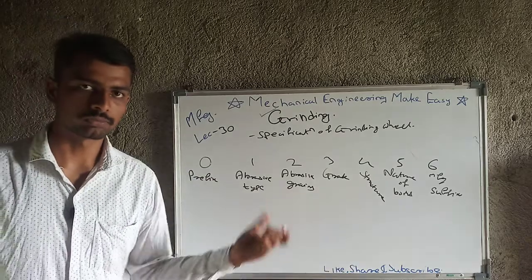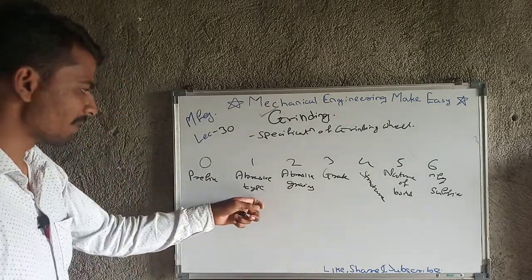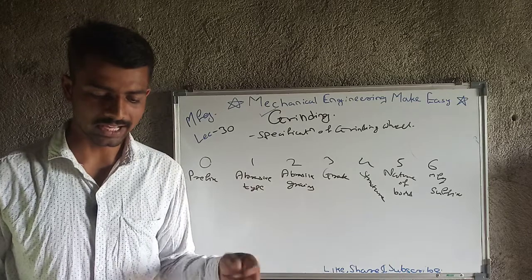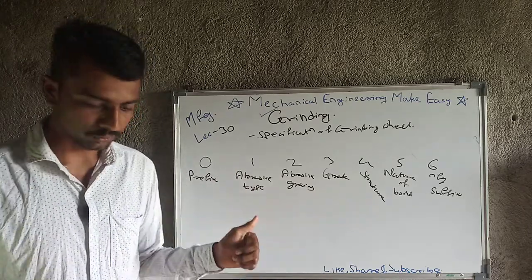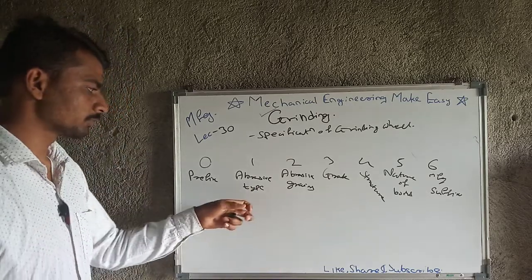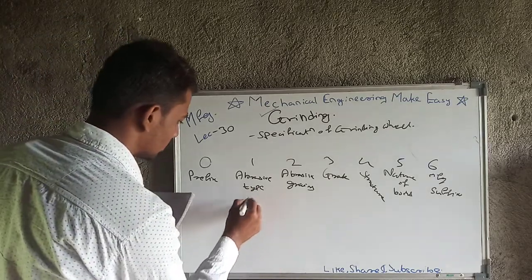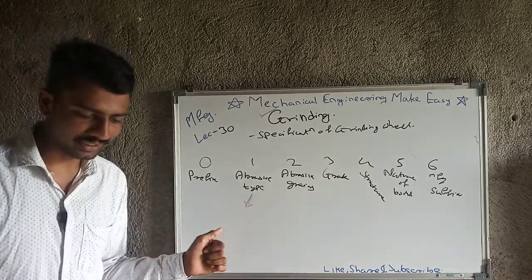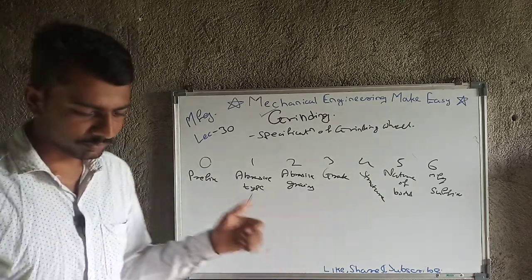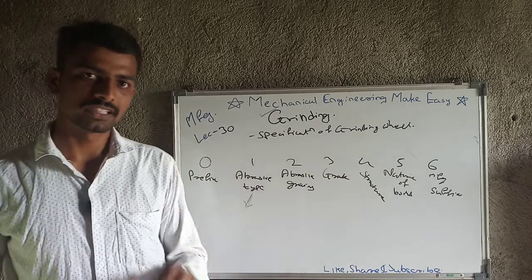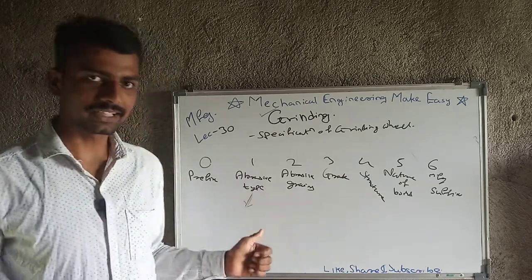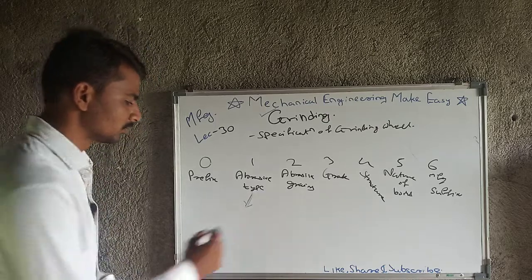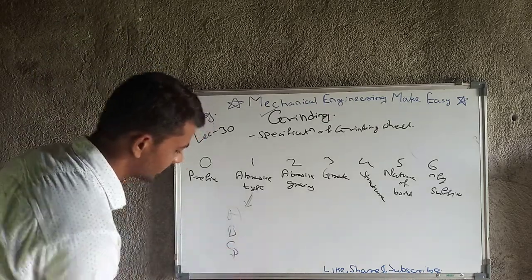Abrasive type refers to the type of abrasive particle being used. Different types include Al2O3, B4C, silicon carbide, and diamond. These are denoted by alphabets: A for Al2O3, B for B4C, C for silicon carbide, and D for diamond.